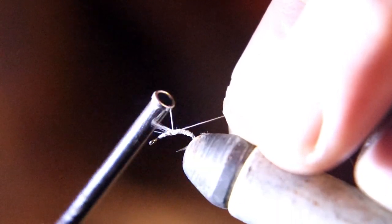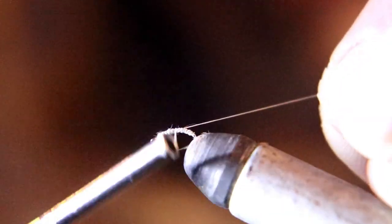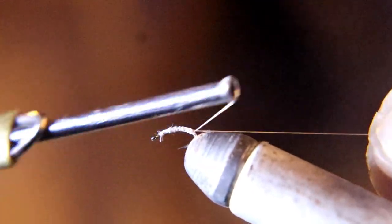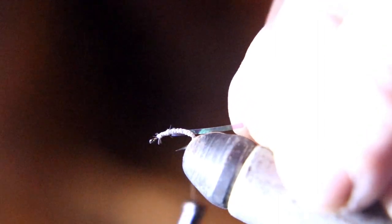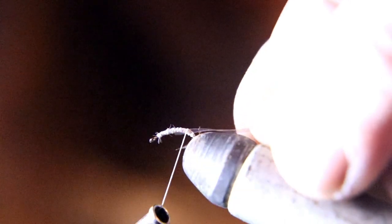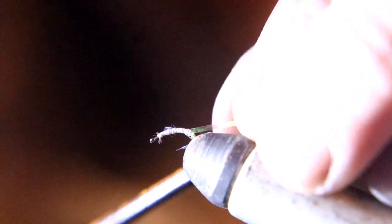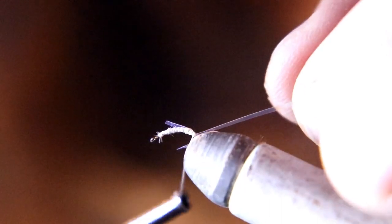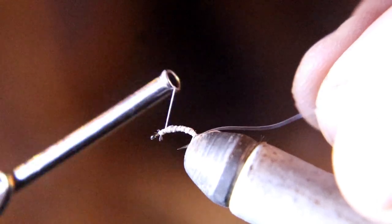Now we're going to tie in a piece of eighth-inch, really small UV clear tinsel. We're going to tie that in. You want to make sure that when the tinsel is tied in, it's on top, so when you fold it over it'll be directly on top of the fly.